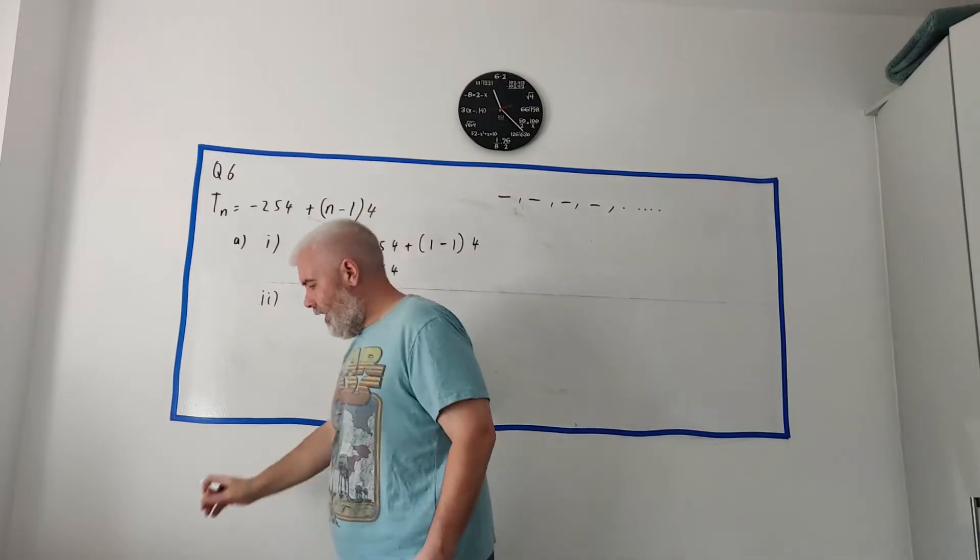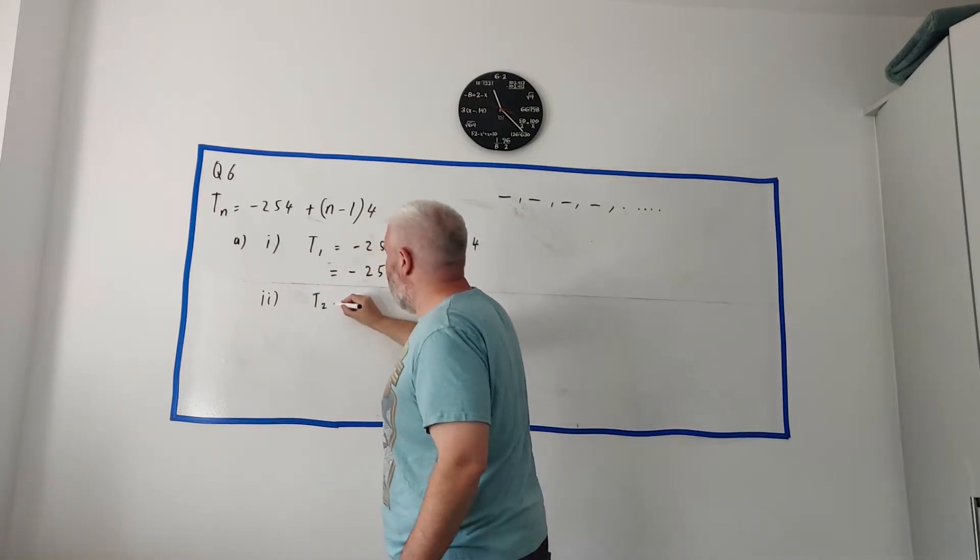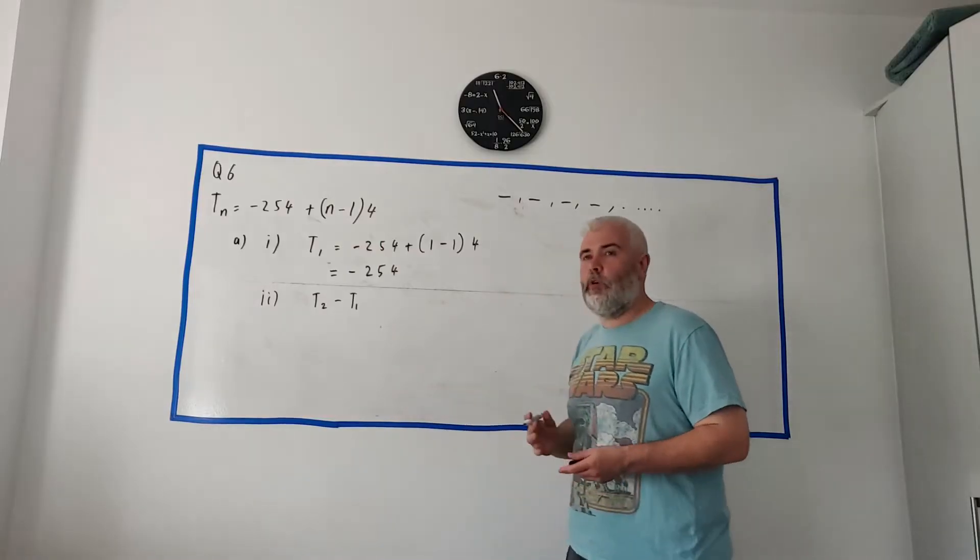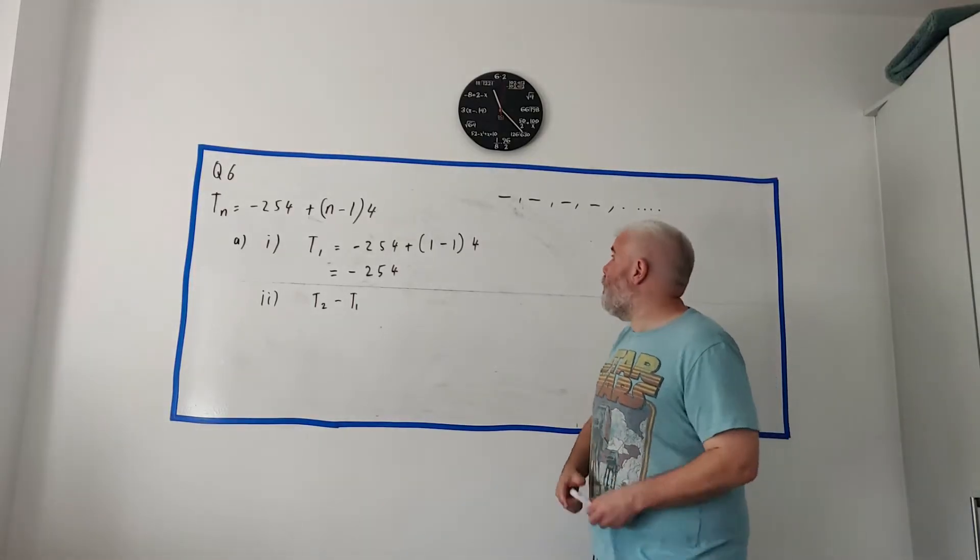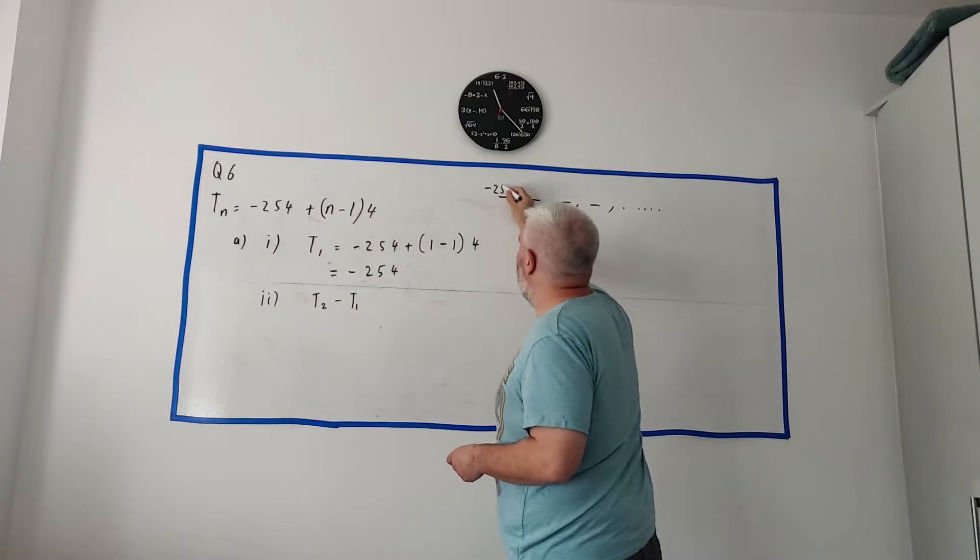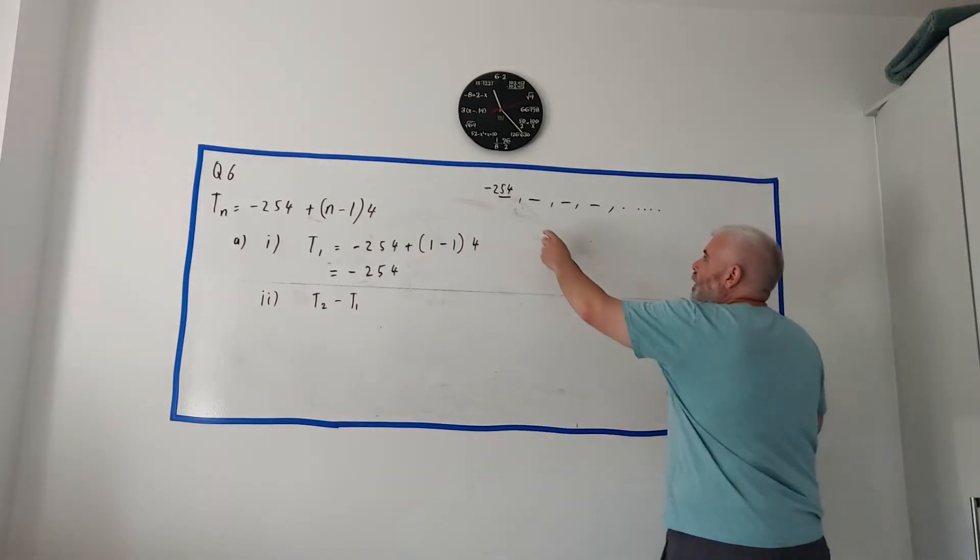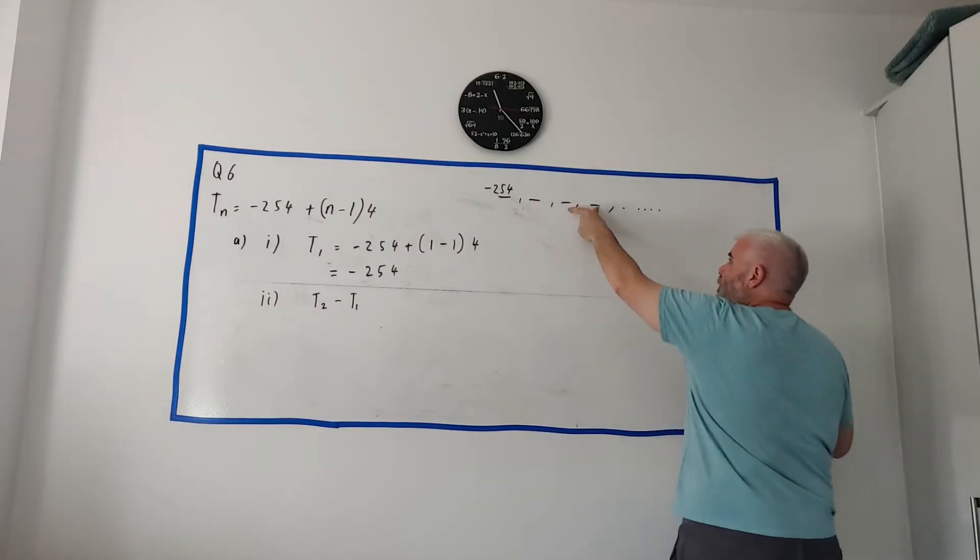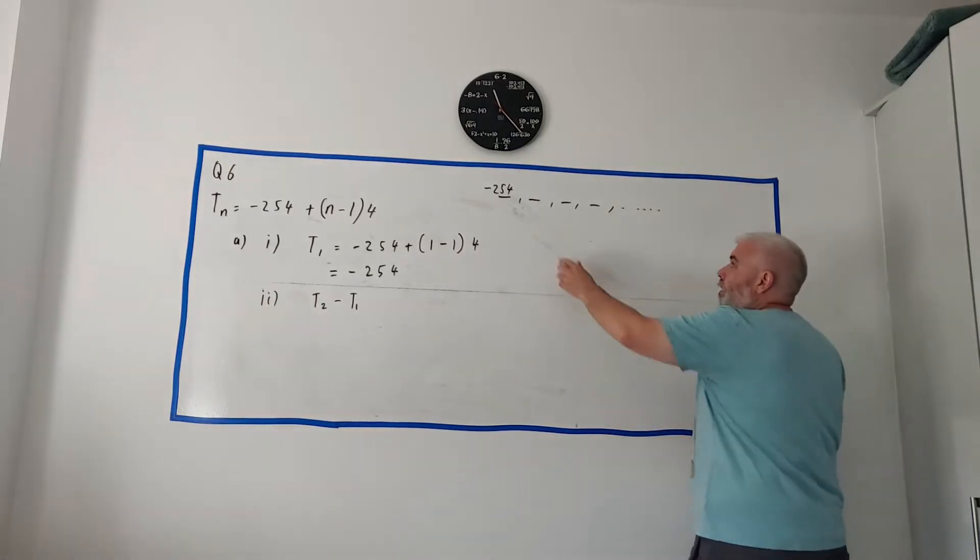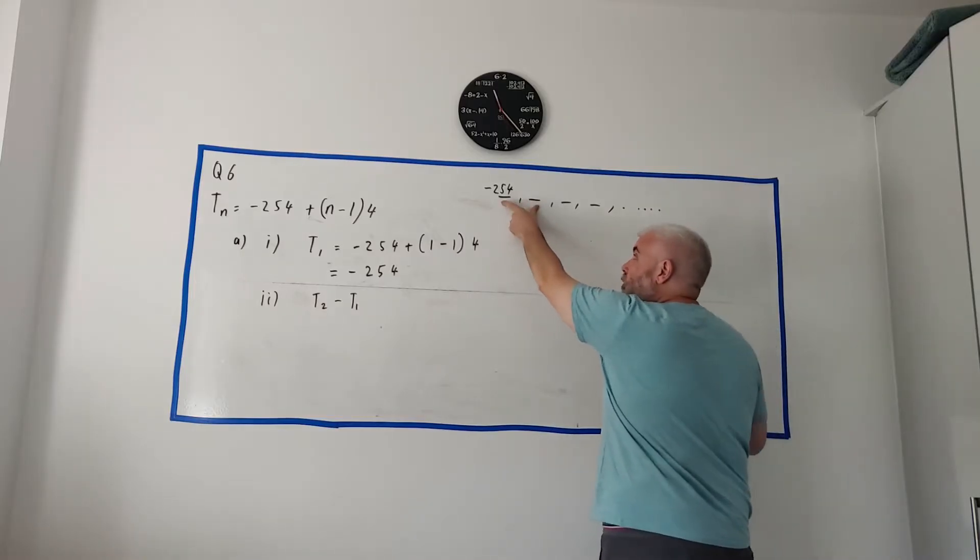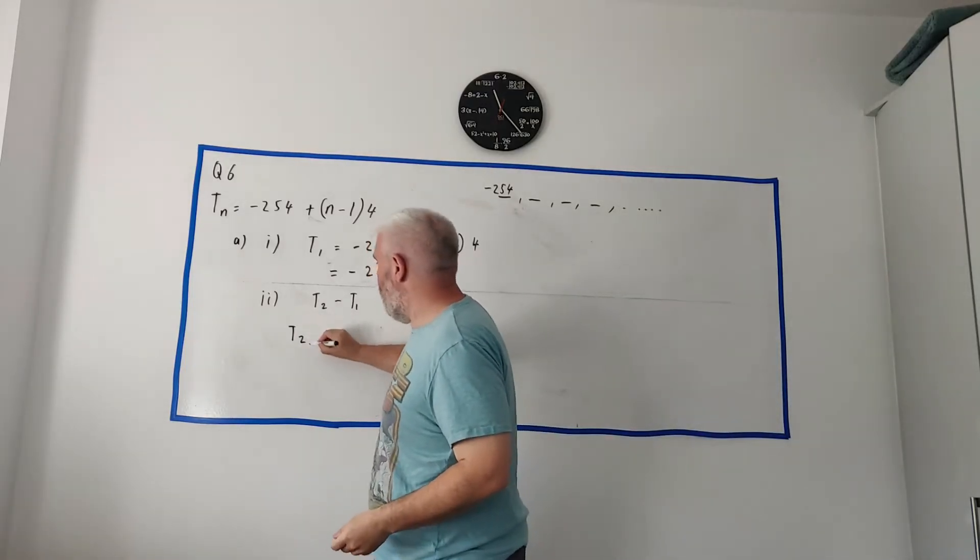So for part 2, they then ask you to find the common difference and they give you a hint. They tell you to get T2 minus T1. Now, this is a very common question as well, but they don't always tell you this part. They might just say, find the common difference. And how we do that is, well, let me first put the number here, minus 254. The common difference in an arithmetic sequence, that's one that adds together, is the difference between these two or these two or these two. Basically, if you can find two numbers beside each other, take them away and you find the difference. Now, we already have one, so getting T2 should be quite easy to get the difference.